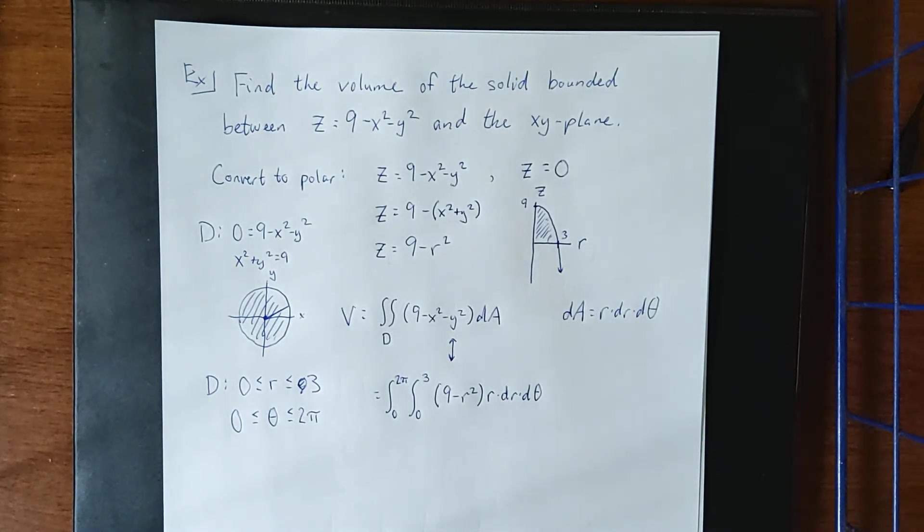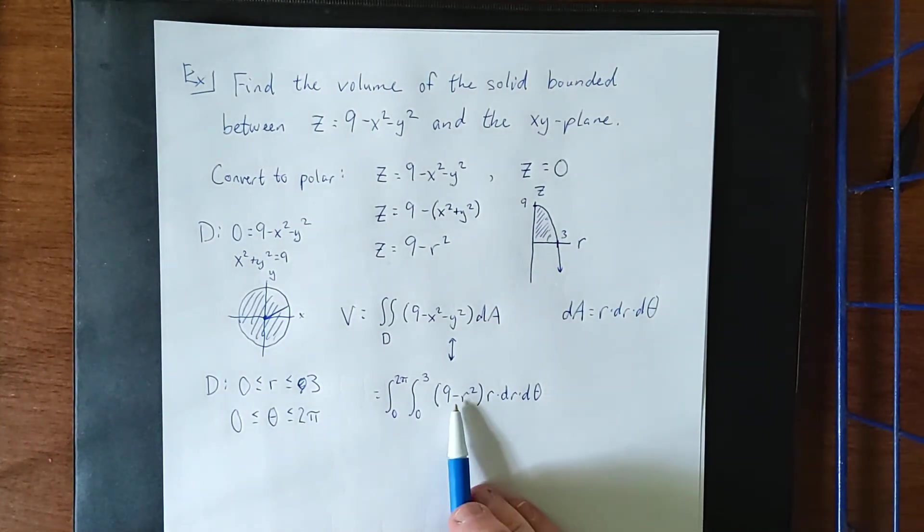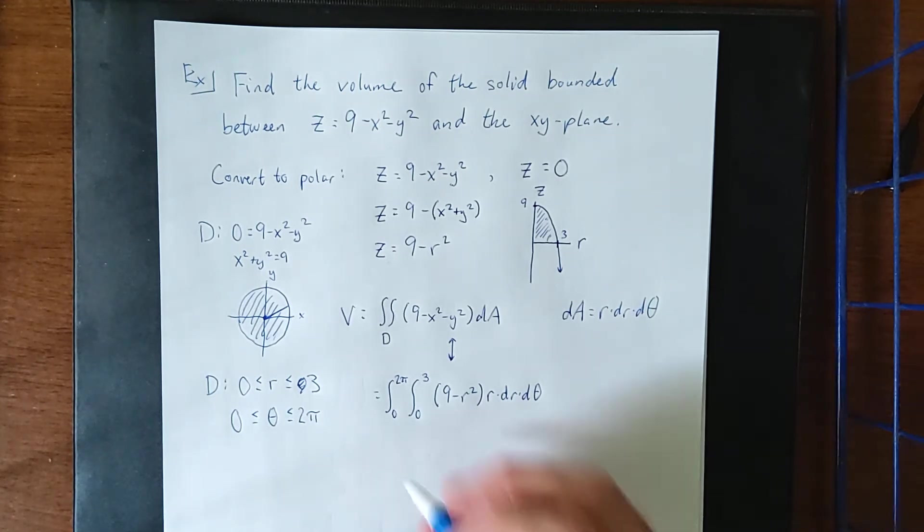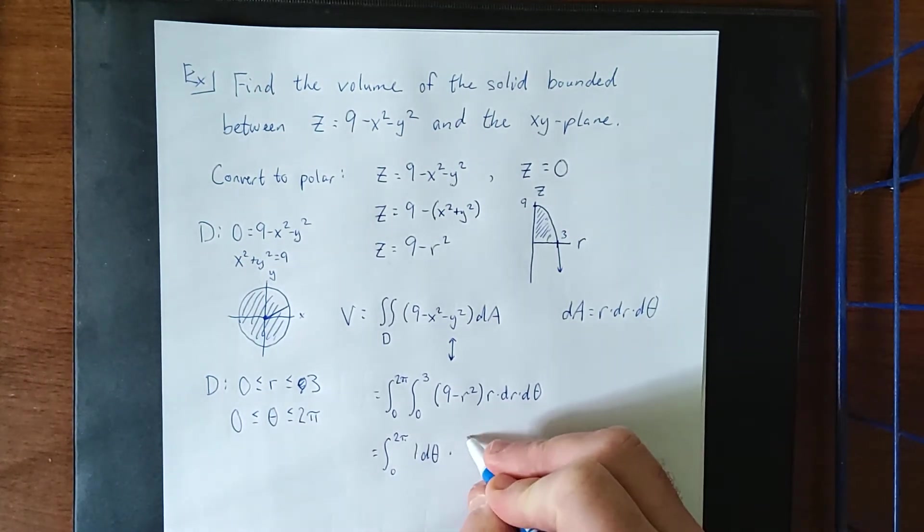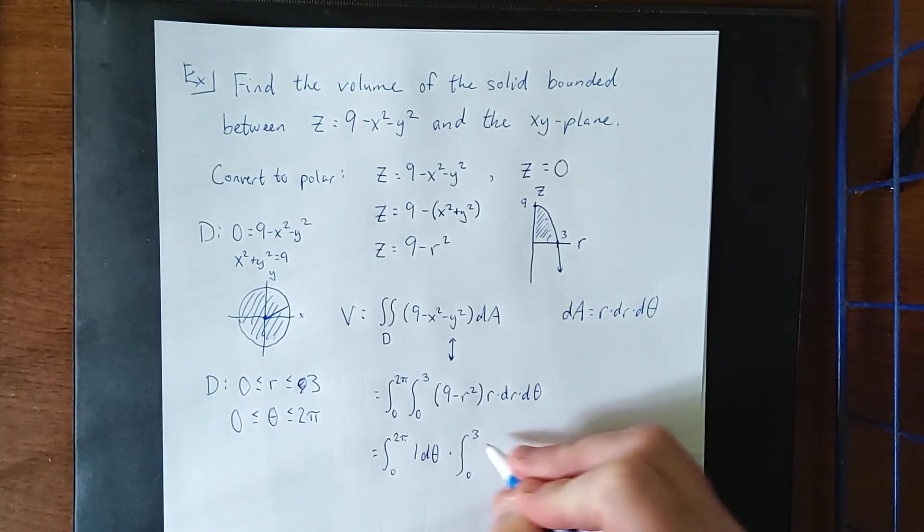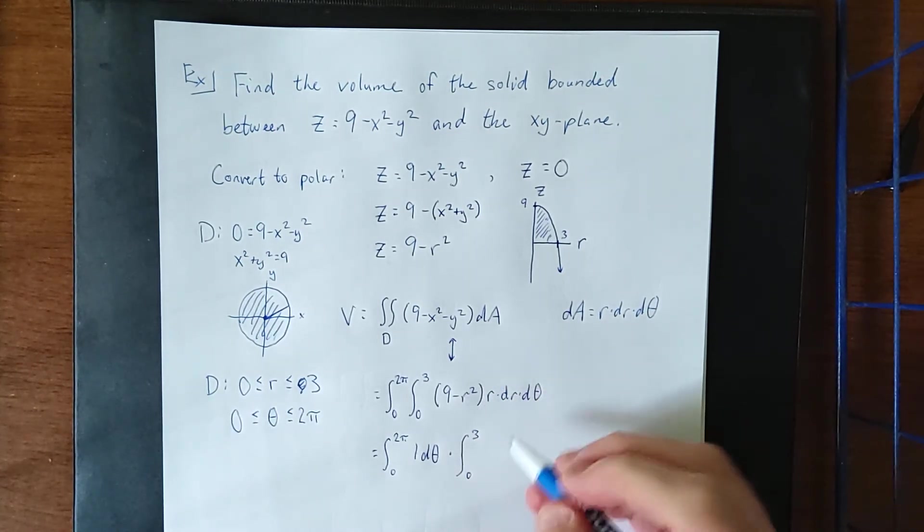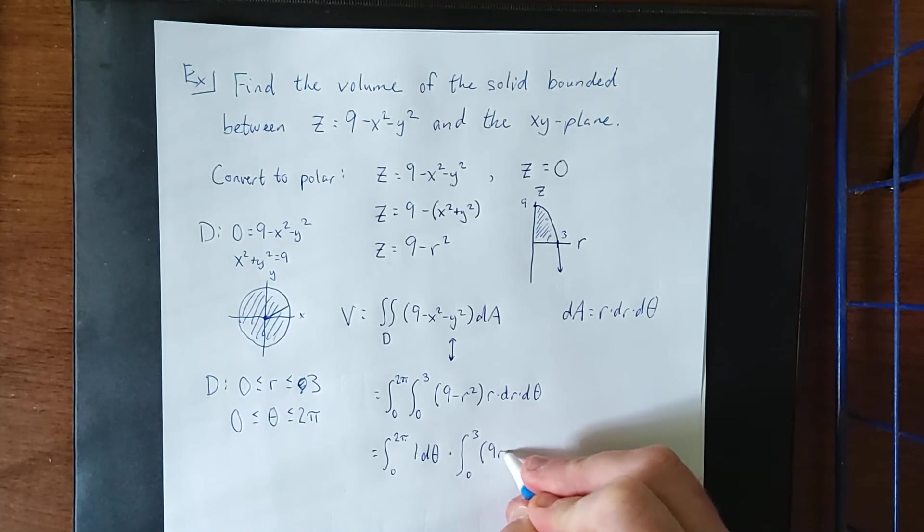Now with all of that in mind, once again, we're going to be able to use Fubini's shortcut and separate into an integral in terms of theta and an integral in terms of r. In terms of theta, there is no theta, so this will simply be 1 d theta. For r, this will go from 0 to 3, and if we distribute the r through the set of parentheses, this will be 9r minus r cubed dr.